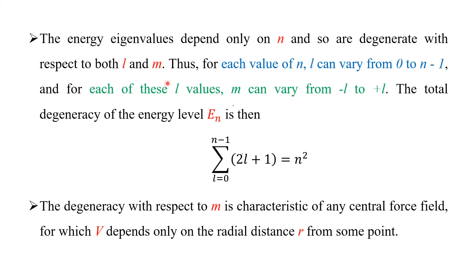Before going into the details of symmetry and degeneracy, we will see some fundamental aspects. We know that the energy eigenvalue depends only on n, the principal quantum number — which orbit the electrons are revolving around. So energy is degenerate with respect to both l and m, where l is orbital angular momentum and m is magnetic quantum number.